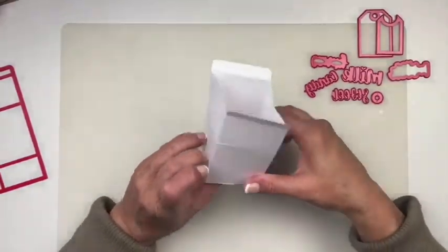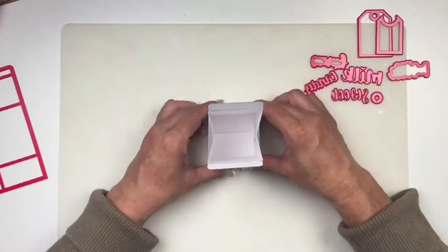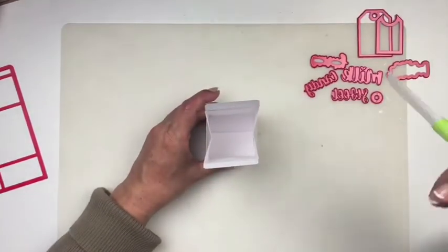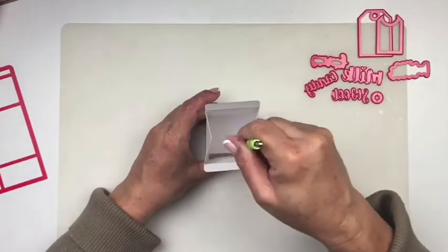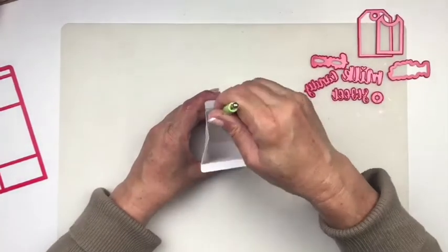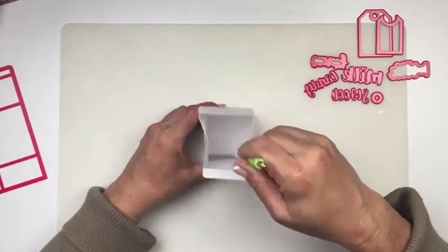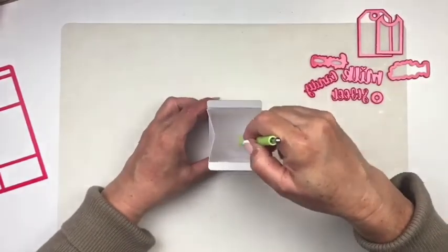Okay now once you have it aligned you want to make sure it's nice and square and this is where again the iCrafter burnisher comes in real handy so it gets down deep into those crevices right there and holds everything together.